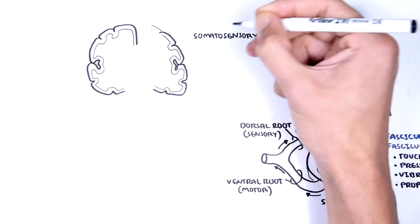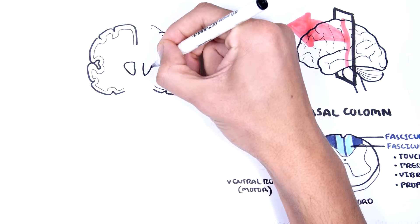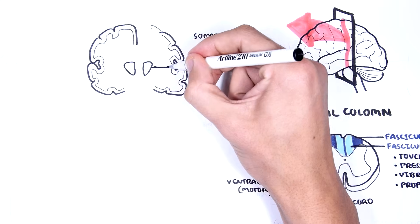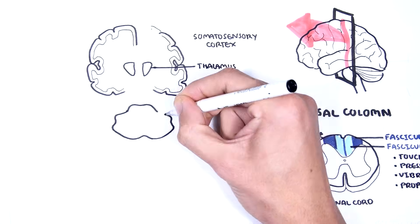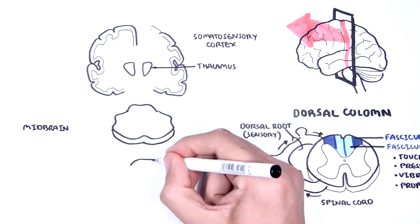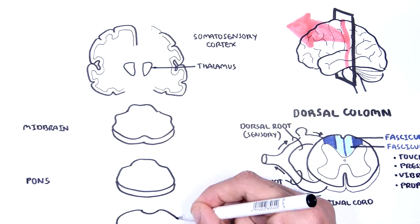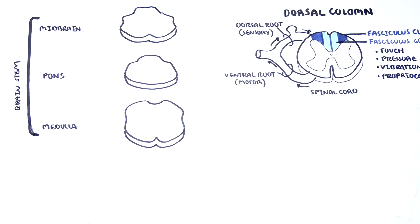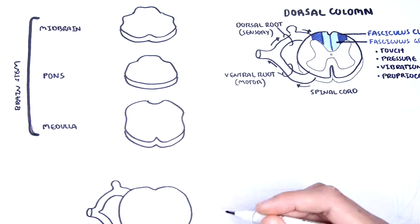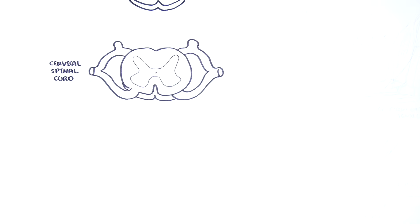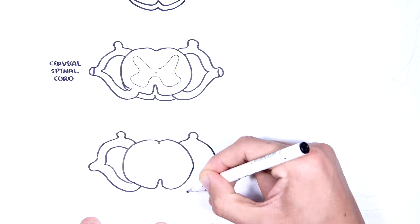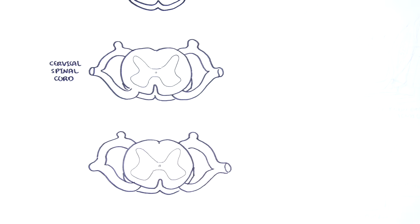The thalamus is an important relay station in the ascending pathway. The cerebrum continues to the brainstem, which is made up of three parts: the midbrain, pons, and medulla. The spinal cord is here, and we're focusing on the cervical spinal cord as well as the lumbar spinal cord cross sections.